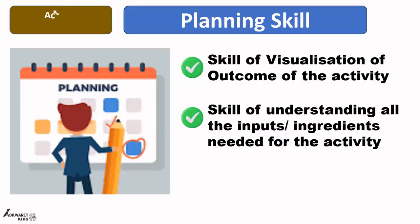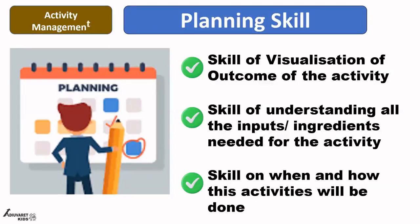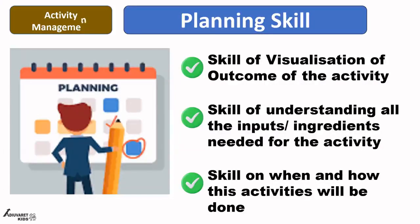By this time you must understand why I am saying this — because in professional life, if we do not understand whether it's a manpower requirement or a raw material requirement, those skills are developed in early childhood, not at the managerial level. The third sub-skill under planning skill is the skill of knowing when and how these activities are to be carried out — whether at school or at home. If that forecasting of when an activity can be done is not there in the child, planning skill will be very difficult.